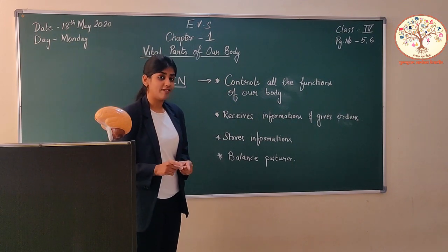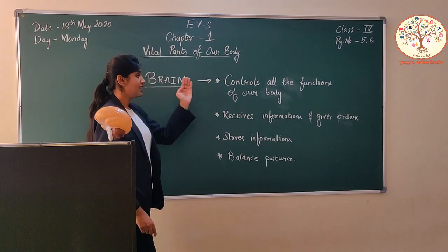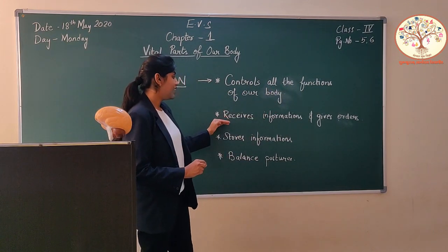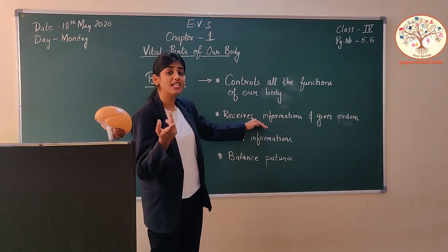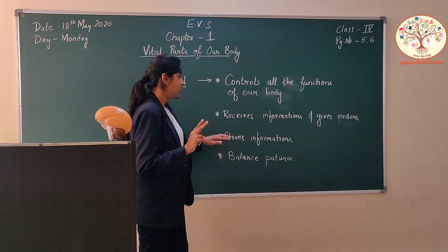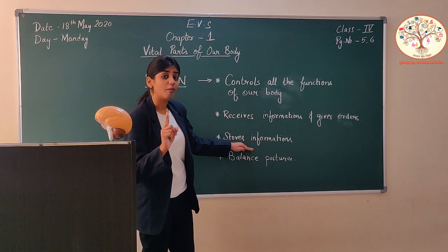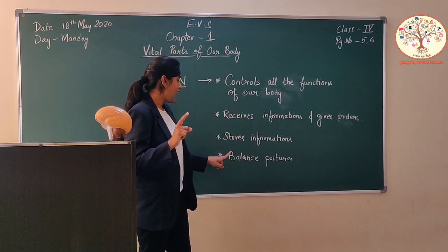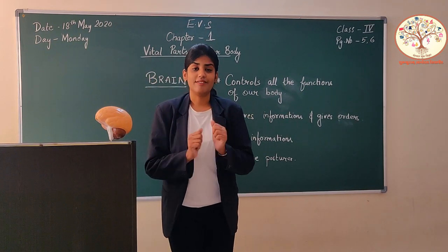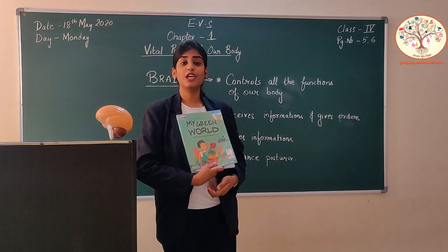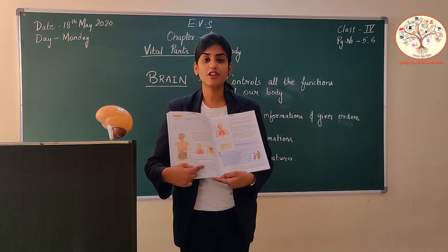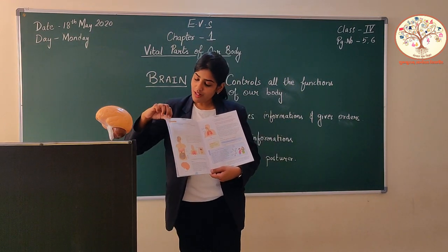So the four main functions of brain which we have learned today are: brain controls all the functions of our body; it receives information from sense organs and gives orders to different parts of the body; it stores information in the form of memories; and it balances our posture such as running, walking, or driving a car. Today your homework is to read page number 5 and 6, functions of brain, and solve the question about internal organs and external organs.